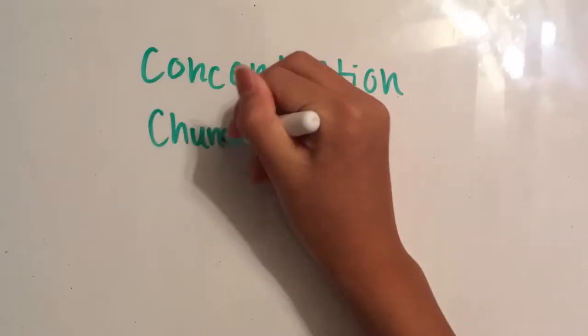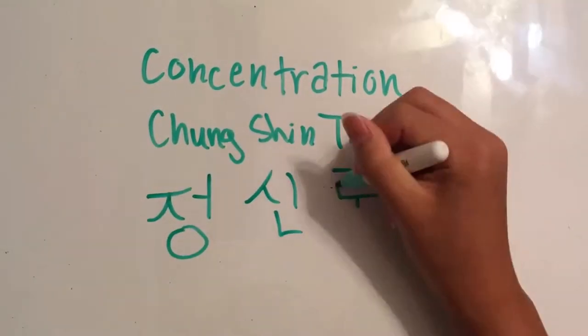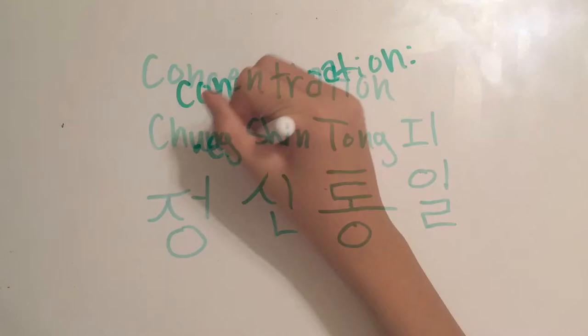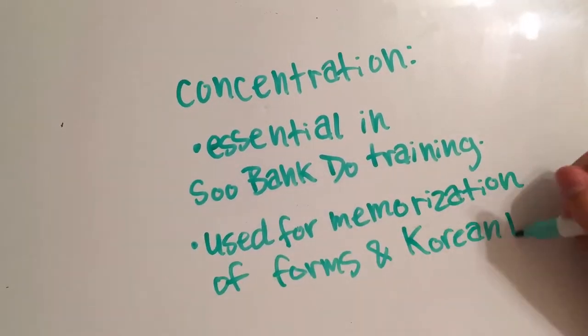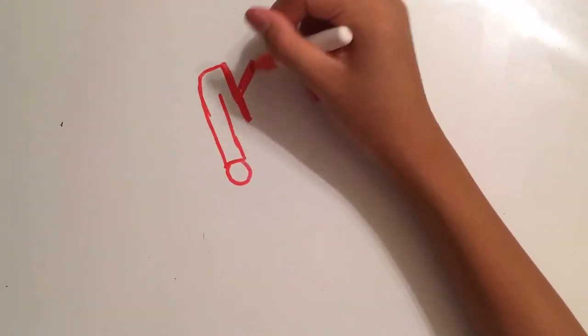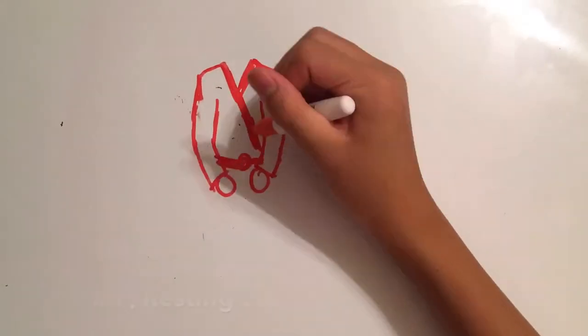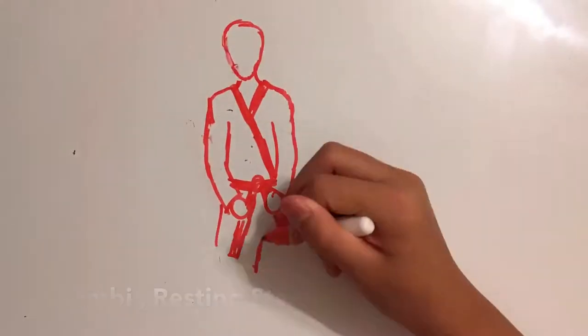Number two, concentration, Chong-shin-tong-il. Concentration applies to all parts of Tsubak-do training. It is used for memorization of forms and Korean terms. Concentration is even used when we rest in chung-bi. It takes concentration to keep mu-do or discipline.